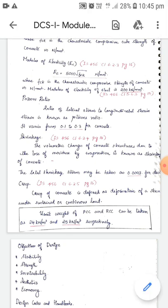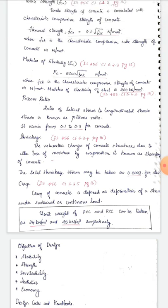Creep of a structure is defined as the deformation of a structure under sustained or continuous load. The unit weight of PCC is 24 kilo-Newton per m³.